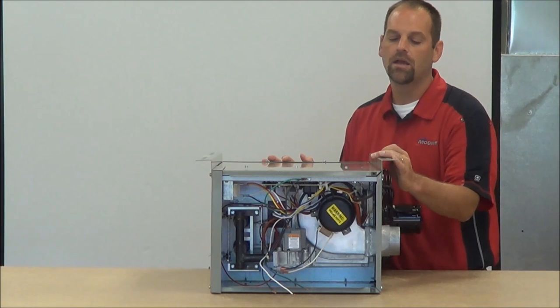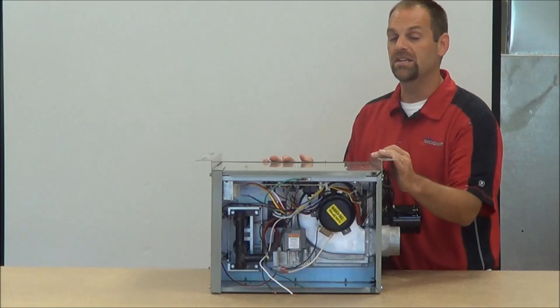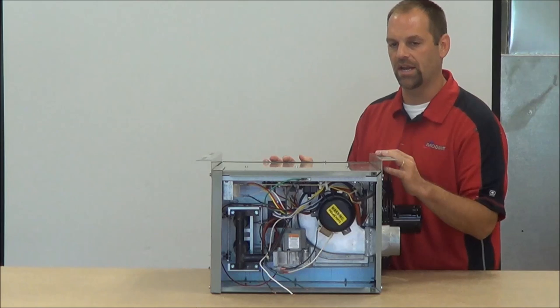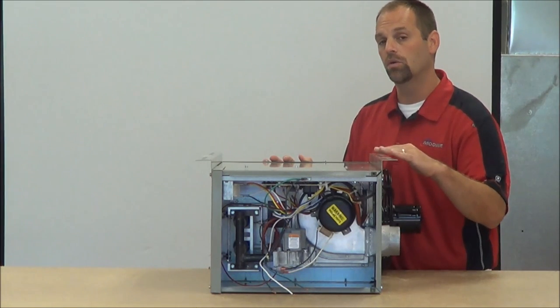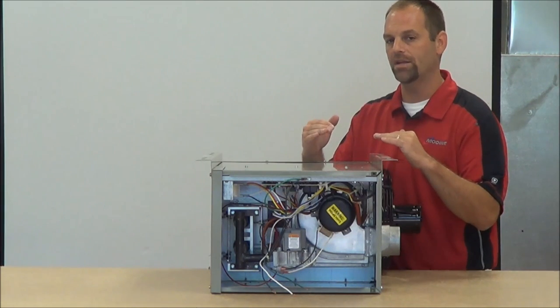At that point, we want to kill the power to the unit. The easiest thing to do, come over to our connections where we have our black and white wires connected to your incoming voltage. What you're going to want to do is, currently you're going to have a black to black wire, and a white to white wire.